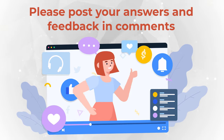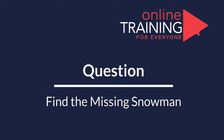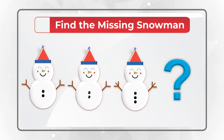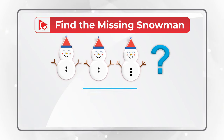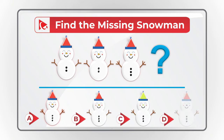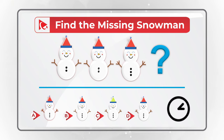The answer is choice C, 33%. Hopefully you've figured this out and now know how to answer similar problems on the test. And here's a question for you to test your skills — you need to find the missing snowman. Please take a close look at the sequence and select one of four choices: A, B, C, and D. Give yourself a little bit of time and post your answer in comments so I can give you feedback. Thanks for participating and good luck!